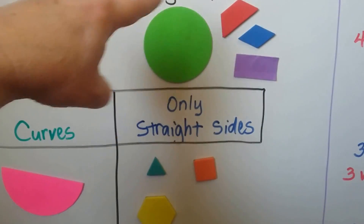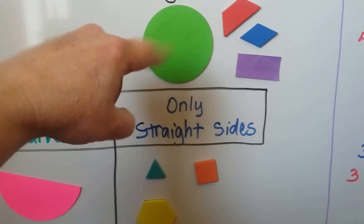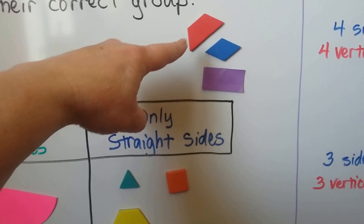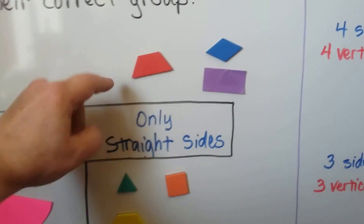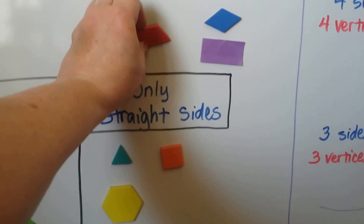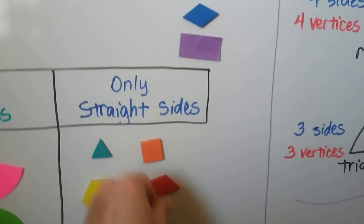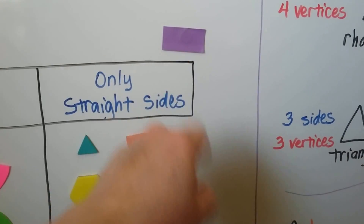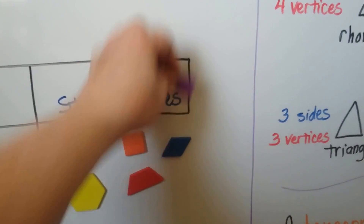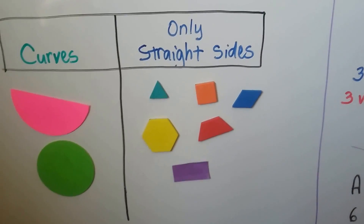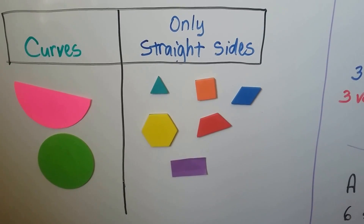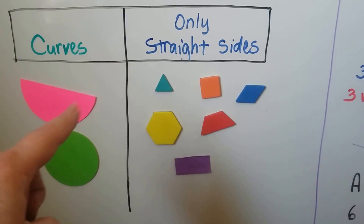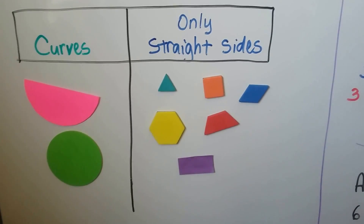Here we have a circle. It's one big curve, isn't it? So that's going to go with the semicircle right here. Here we have a trapezoid. It only has straight sides, so it's going to go here. And the rhombus only has straight sides, doesn't it? And the rectangle only has straight sides. So we can sort the shapes by how we can describe them. These have curves, these have only straight lines, and we can sort them that way.